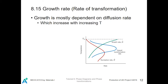Growth rate: after the formation of the nucleus, the grains will grow and finally transform into completely new grains. Growth is mostly dependent on the diffusion rate, because atoms need to diffuse to the nucleation site for it to grow larger and larger until they become new grains. The growth rate increases with increasing temperature. The overall transformation rate is the product of the nucleation rate and the growth rate, and there is also an optimum temperature for the overall transformation rate.